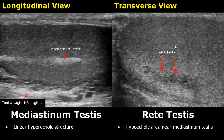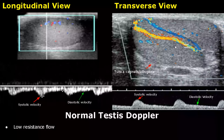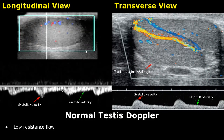The spectral Doppler waveforms of the testes have a lower resistance flow. This is the systolic velocity and here is the diastolic velocity. It has a large quantity of forward diastolic flow.